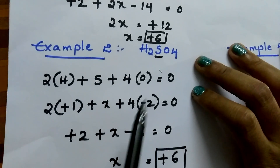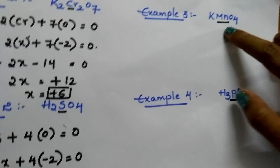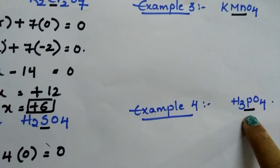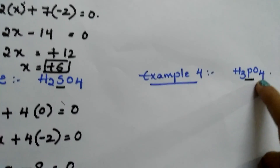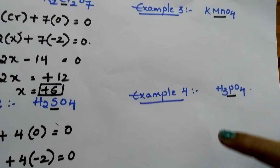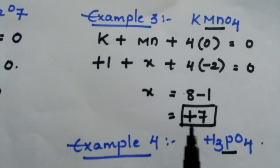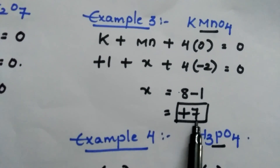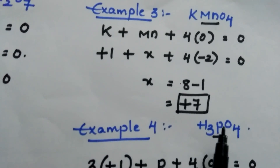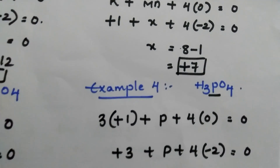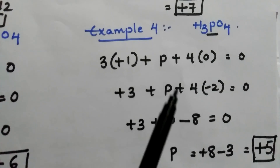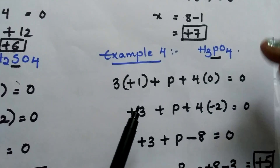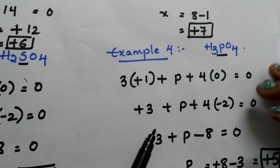Students, click on the pause button. Now try to find the oxidation number of manganese in potassium permanganate and phosphorus in phosphoric acid. After trying, you will see the answer. Now check your answers. The oxidation state of manganese in KMnO4 is plus 7. The oxidation state of phosphorus in phosphoric acid is plus 5. If you got the correct answers, you are perfect in the oxidation number concept. If you didn't get the correct answer, once again see this video.